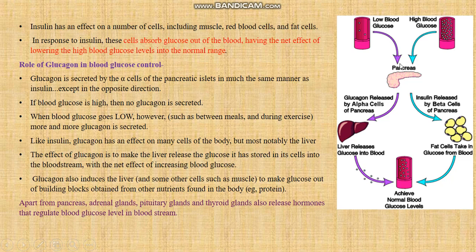When there is low blood glucose, it triggers the pancreas for the secretion of glucagon by alpha cells, then glucagon gives instructions to the liver to release glucose into the blood to achieve a normal blood glucose level. In both cases: if there is high blood glucose, insulin comes into picture; if there is low blood glucose, glucagon comes into picture. Glucagon also induces the liver to make glucose out of building blocks obtained from other nutrients in the body, like protein.